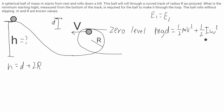At this point there's a lot I don't know — I don't know the velocity v, I don't know omega (the angular velocity), and I don't know I. But the moment of inertia for a sphere is 2/5 mr². So now I know I; I just have to find the velocity.